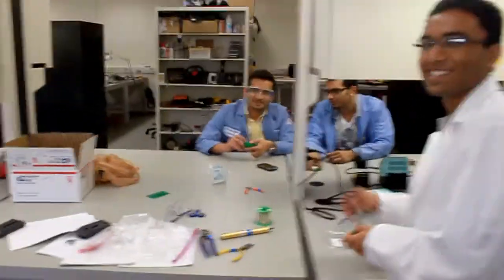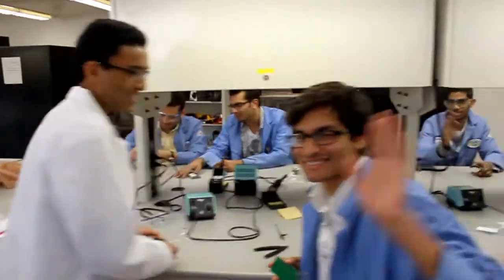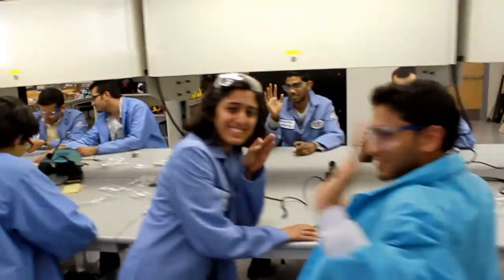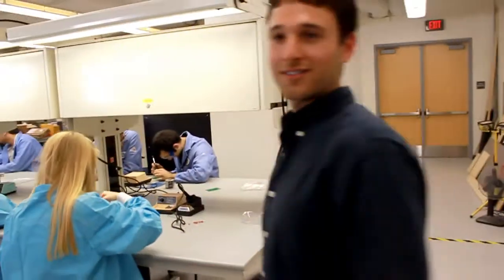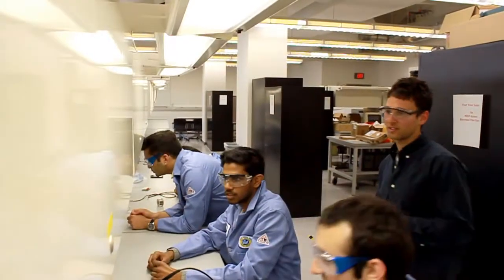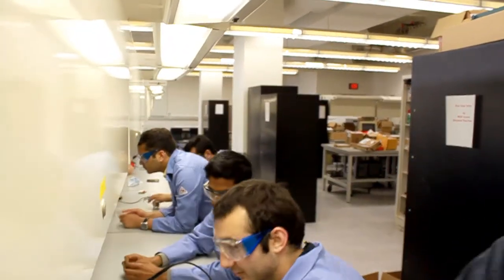These electrosurgery units are used to cauterize and cut skin. Basically, a lot of this equipment, when it arrives on scene, it doesn't really function well. So what we're doing over here is we're building a unit which can test these electrosurgery units. By doing so, these third world countries know if their ESU is working.